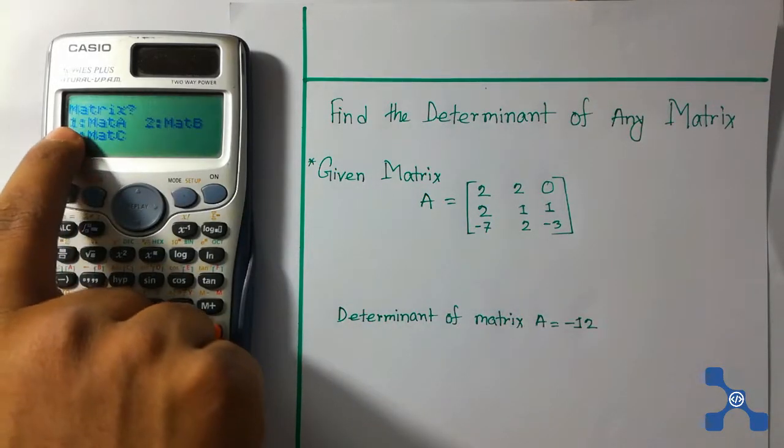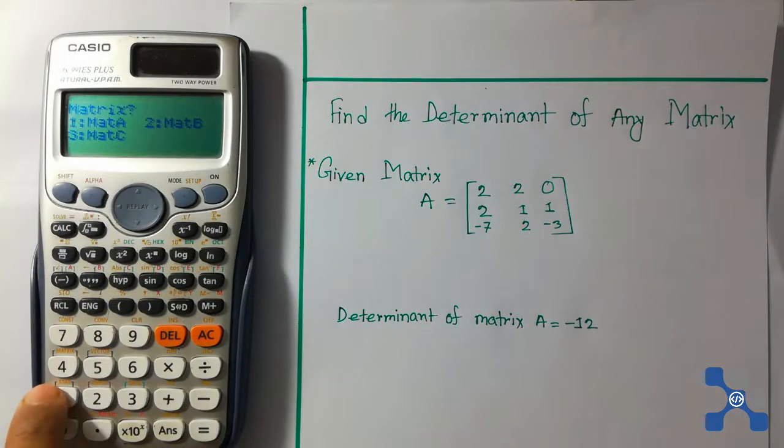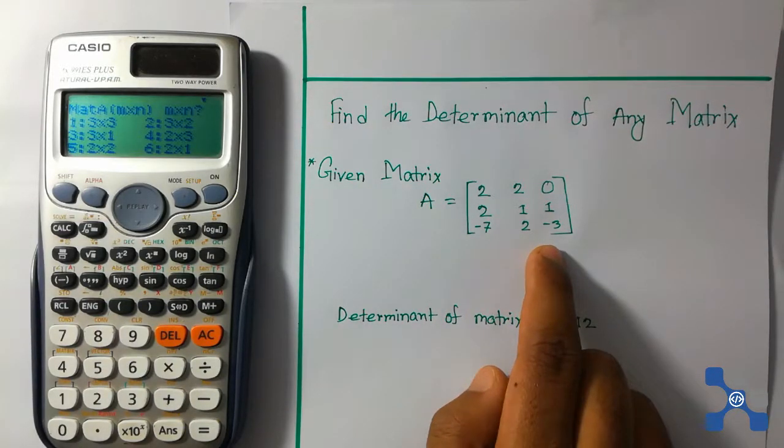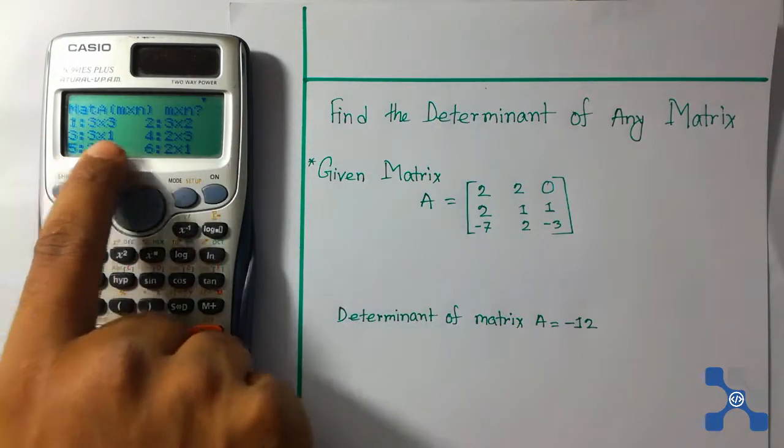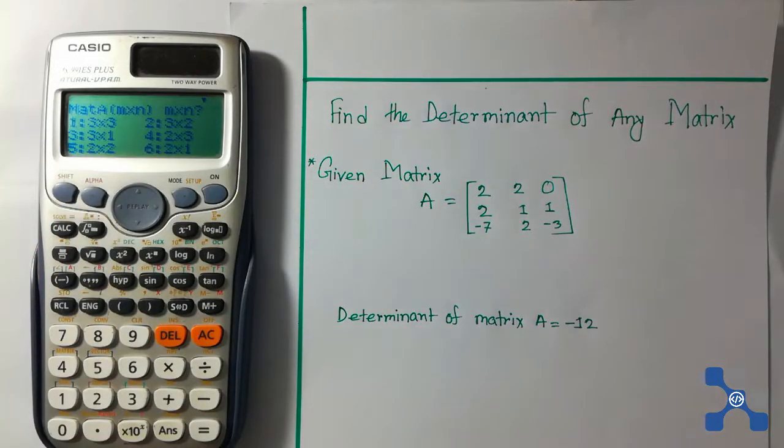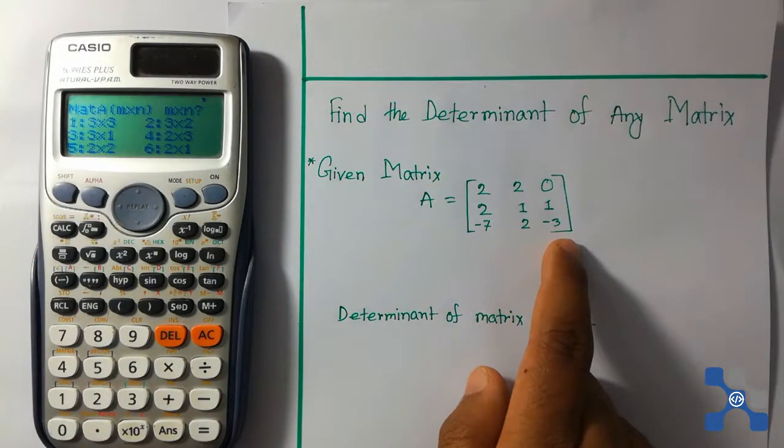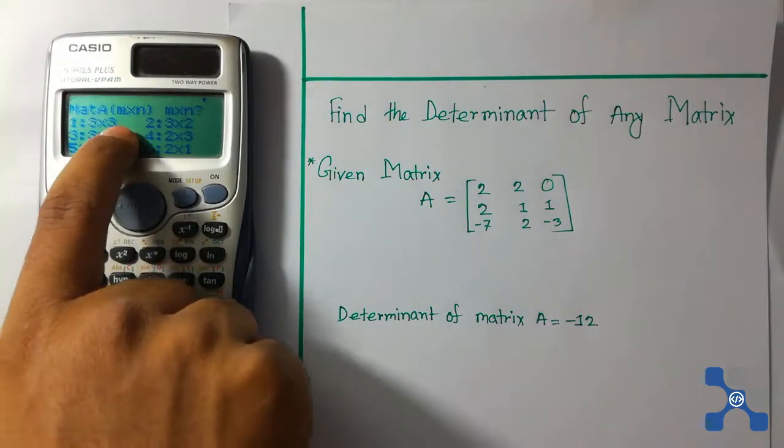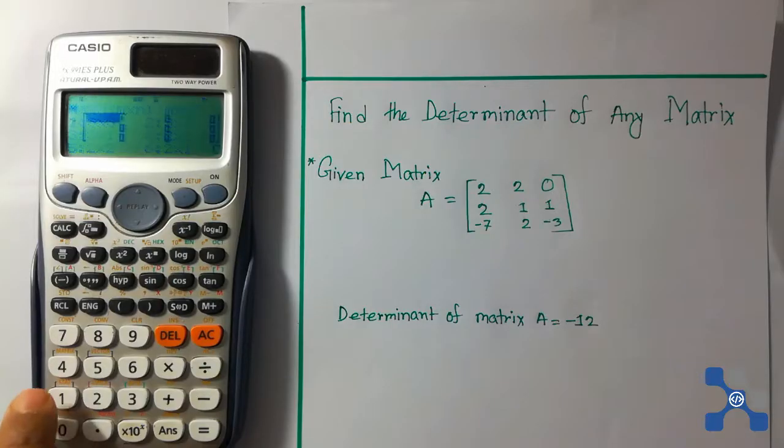Here is 1 for mat A. Press 1 button. Our given matrix is 3 by 3. There are lots of options: 3 by 3, 3 by 2, 3 by 1. Our given matrix is 3 by 3, so we need to select 3 by 3. Press 1 button.